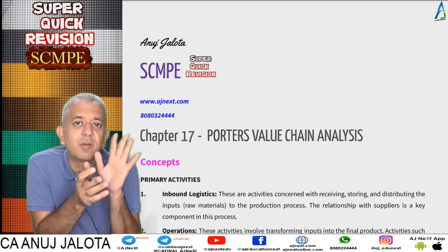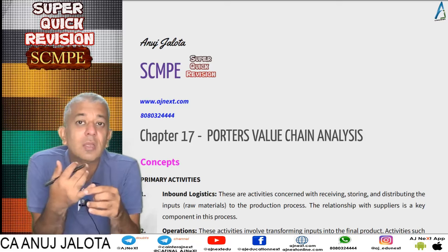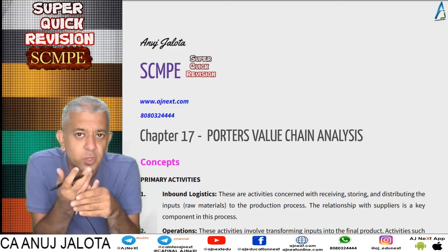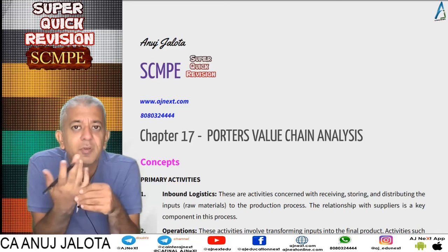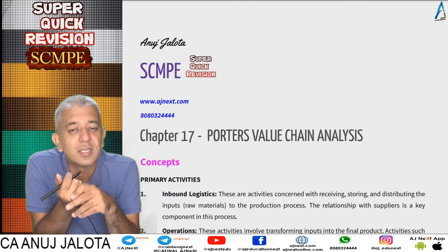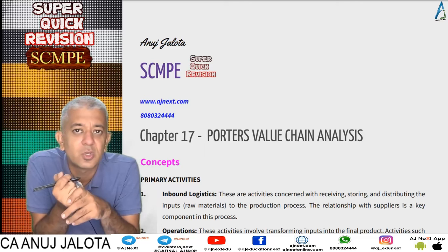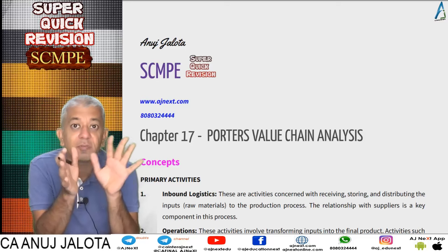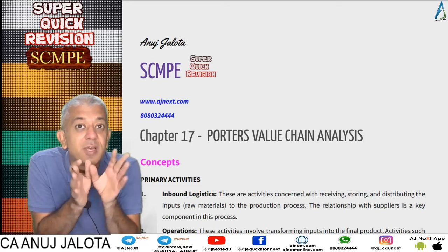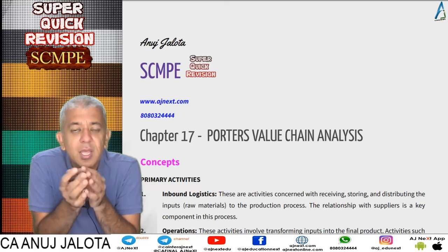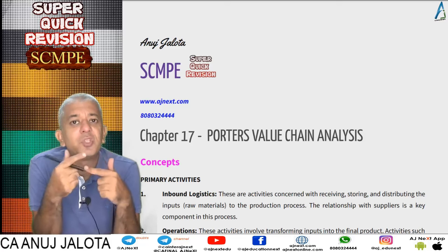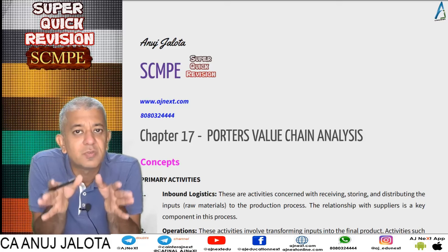For primary activities, he told that there are five of them. These are: inbound logistics, operations (your manufacturing part), outbound logistics, marketing and sales, and after-sales service. He told that these are the five primary activities due to which a company earns money. These five activities are super important — even if one activity is not working properly, it will have a chain effect and all other activities will stop functioning properly.